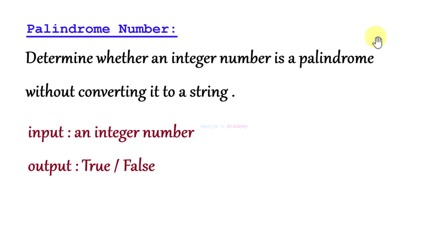Hello and welcome to Amulya's Academy YouTube channel. Today we are going to solve a coding problem called palindrome number. The problem is to determine whether an integer is a palindrome without converting it to a string. A palindrome is a number that reads the same backwards as forward, and we must solve this using only mathematical operations.